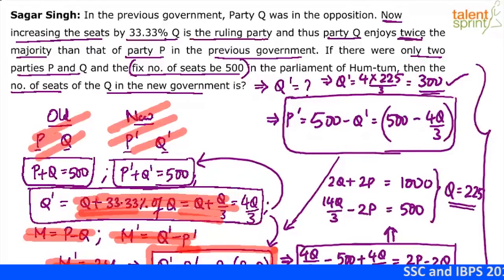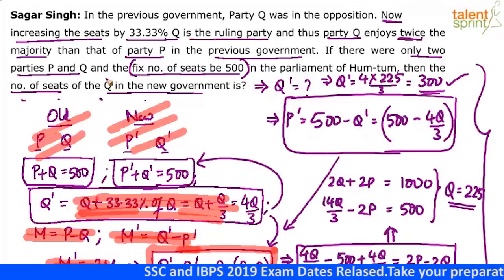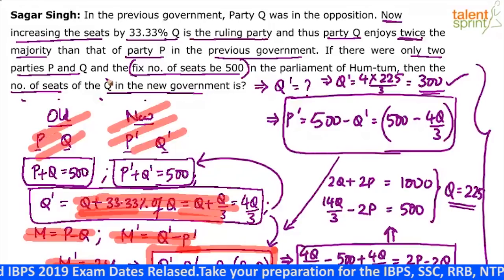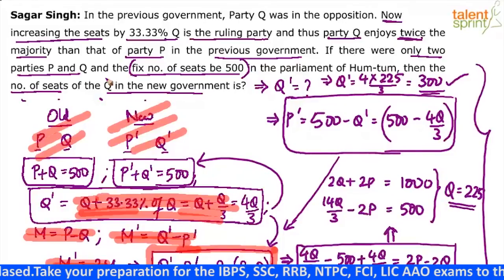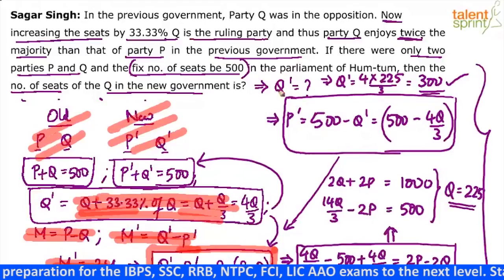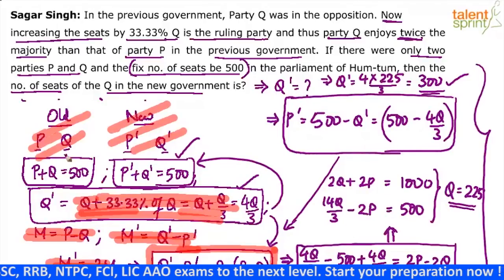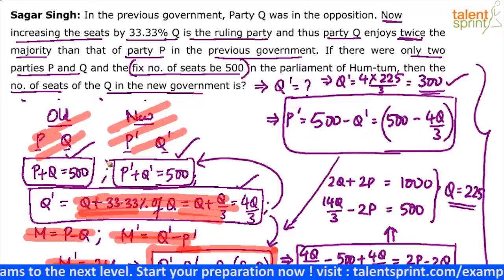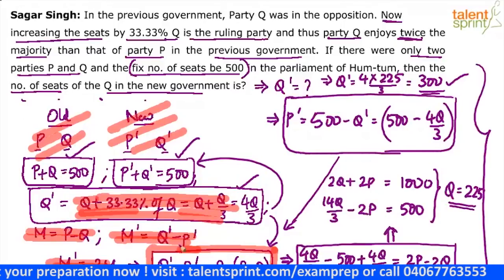I would urge you not to worry about the length of the solution or time spent — we were forced to do all this because options were not given. If options are given in the exam, I would do nothing but verify using the options. From Q dash, can we find P dash? Yes, because we know P plus Q equals 500. From Q dash, can we find Q? Yes, because Q dash equals 4Q by 3. Once we get Q, we can find P. Then find P minus Q and Q dash minus P dash and see if the difference is twice. If yes, that's the answer; if no, move to the next option. Verifying one option would take about 20 seconds, so we'd arrive at the answer in about one minute — definitely less time than solving all the equations. The final answer is 300.